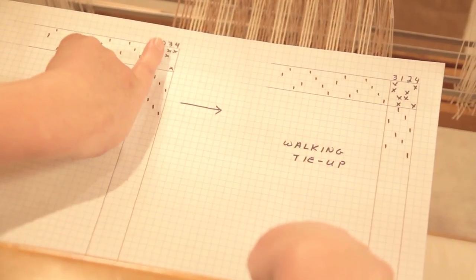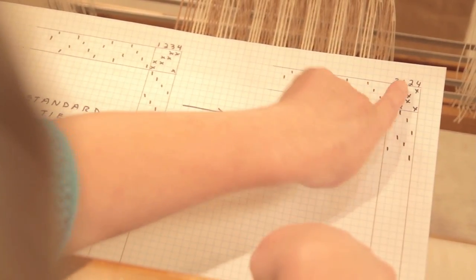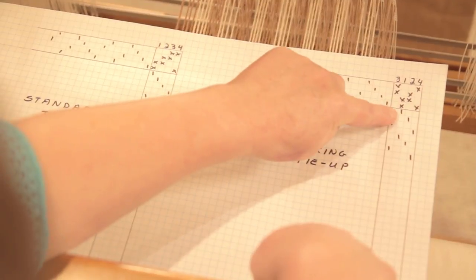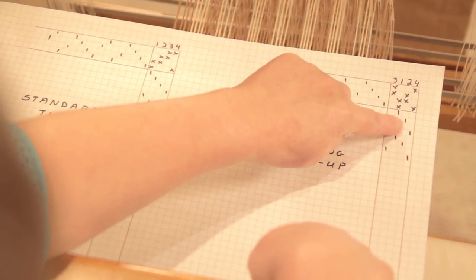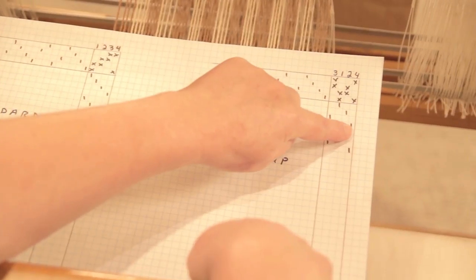Treadle two from here has been moved into this position, treadle two and three. Treadle three here, and treadle four here has been moved to here. This allows me now to step with my left foot, then my right foot, then my left foot, then my right foot.